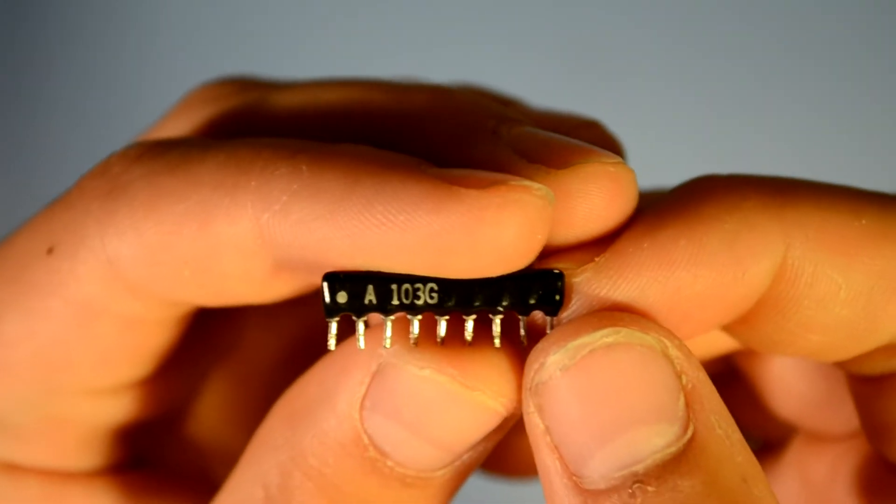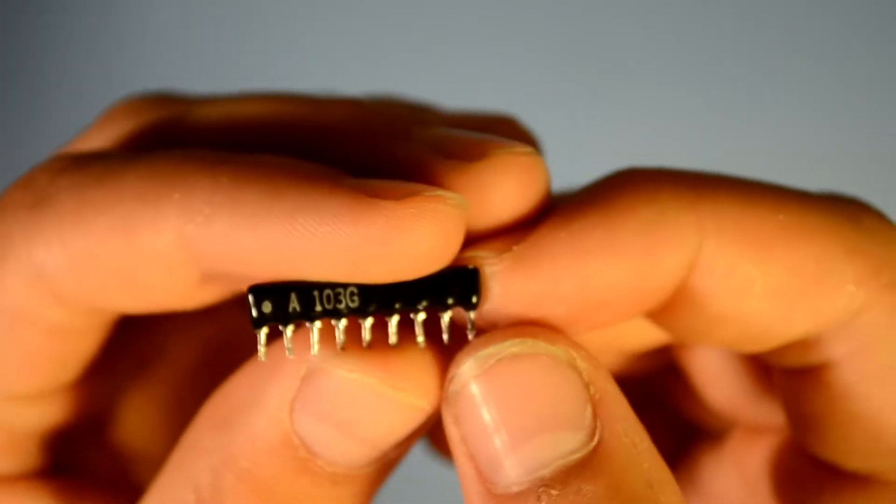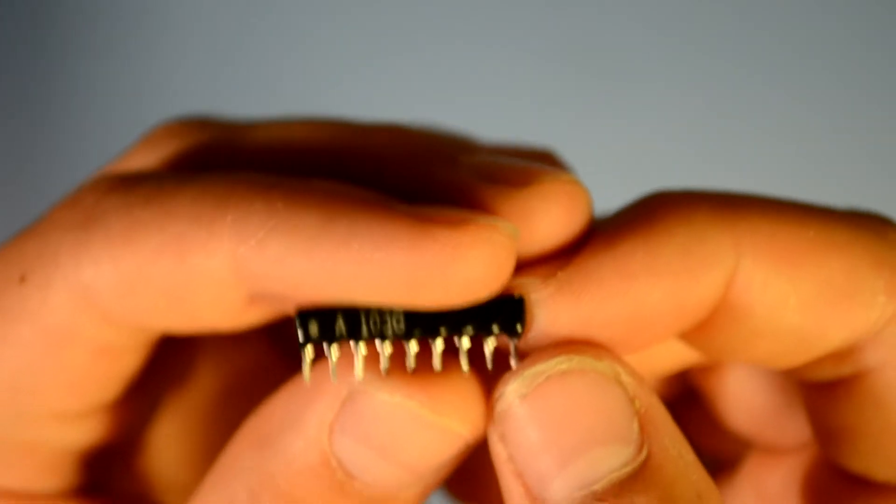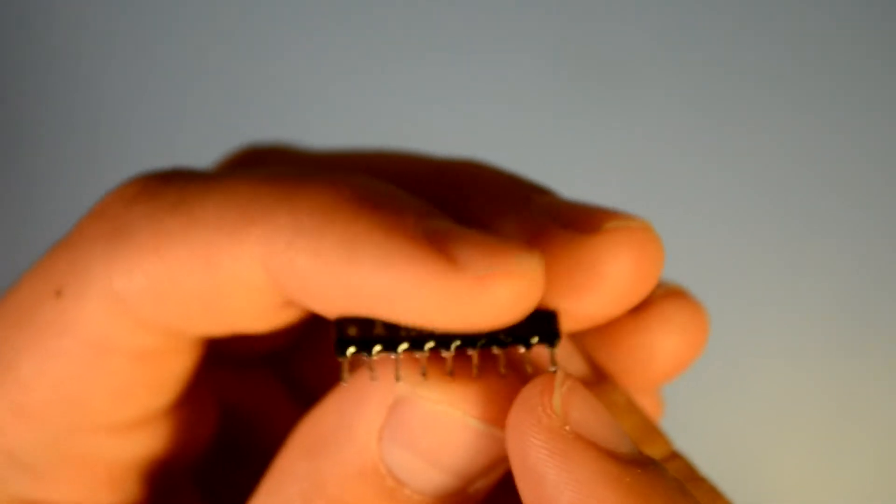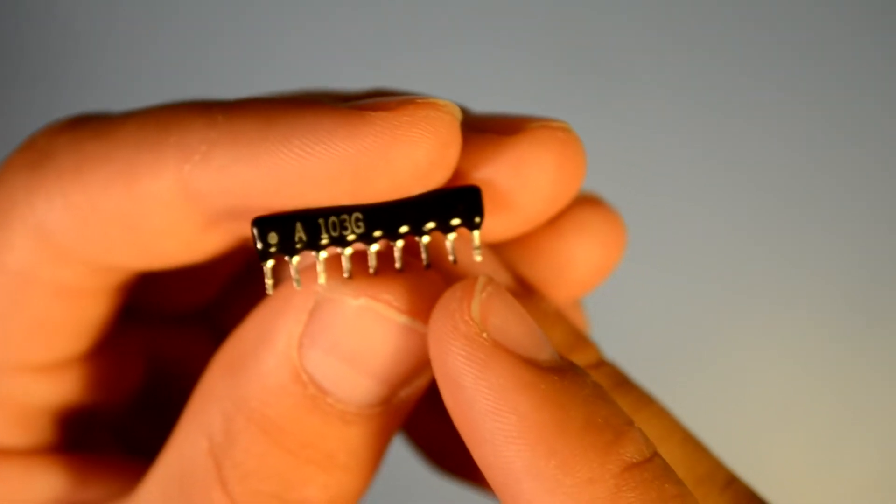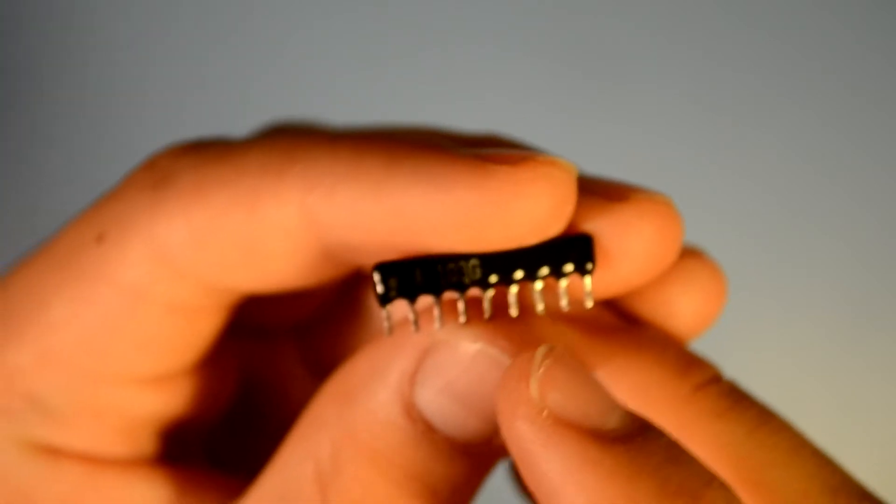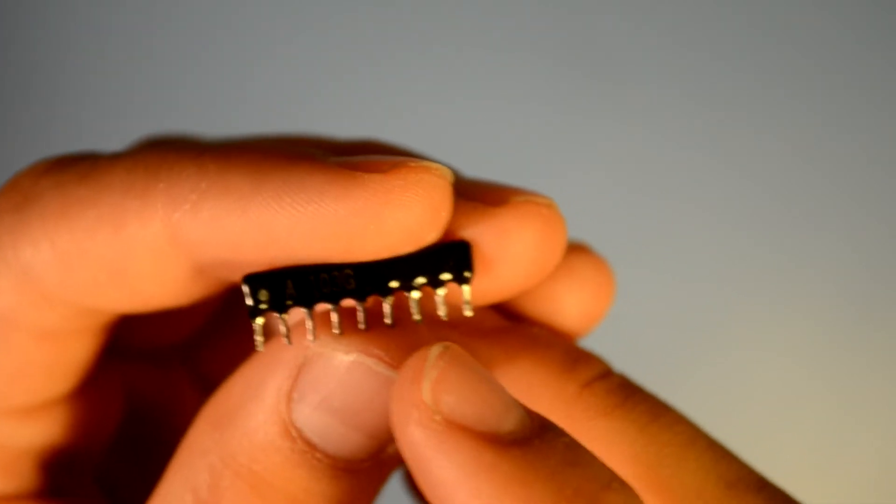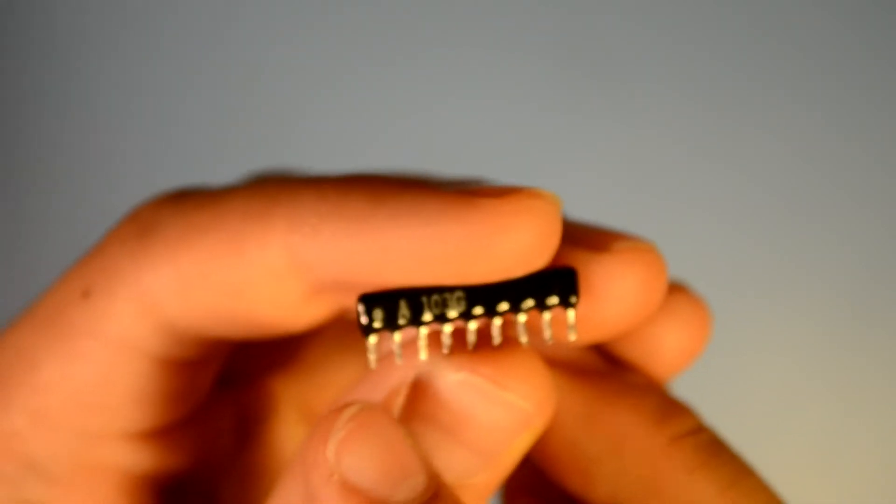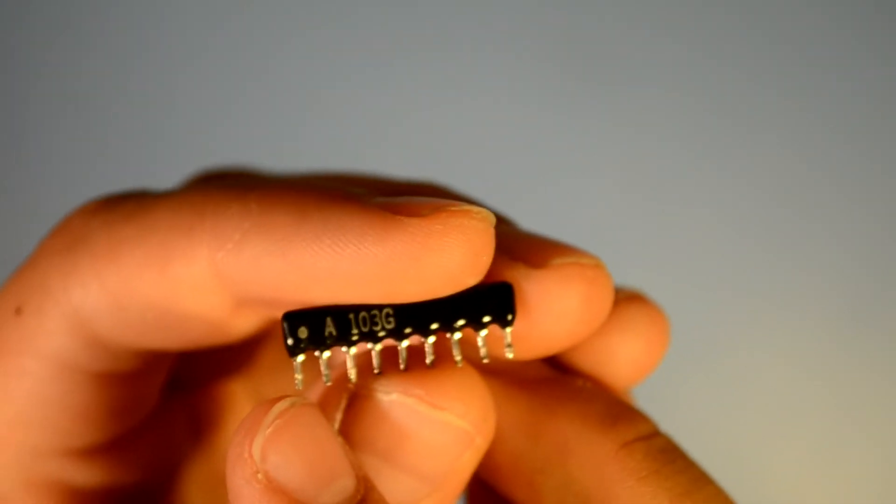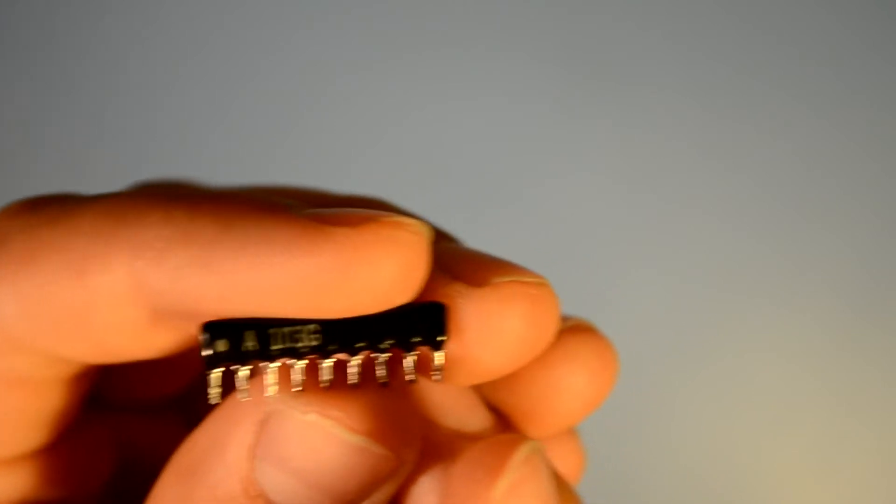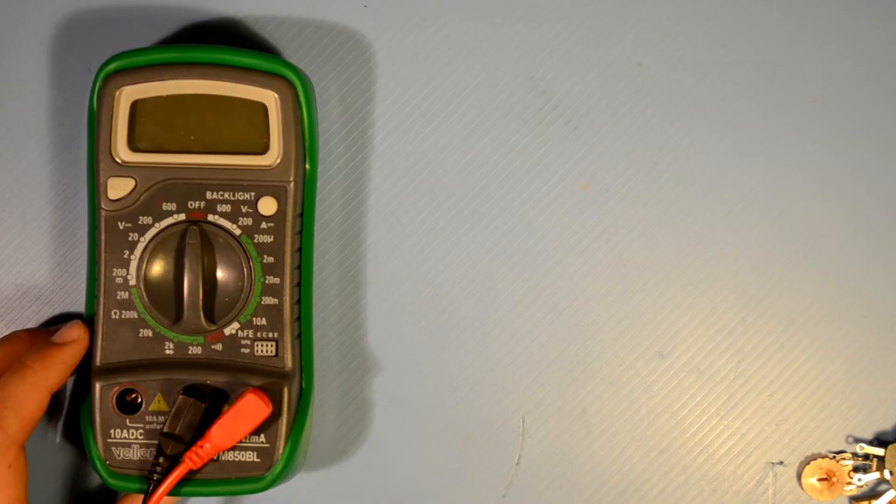And last but not least for resistors, we have resistor networks. This one is an 8 resistor network. Basically, there's 8 resistors, and one of each of those resistors are all connected together, and are on this pin. This is good if you'd like to drive lots of LEDs and only use one component, as opposed to 8 individual resistors.